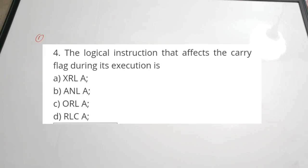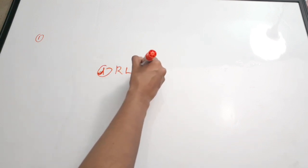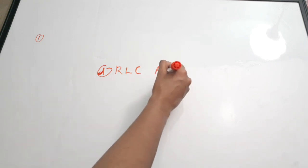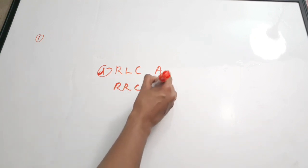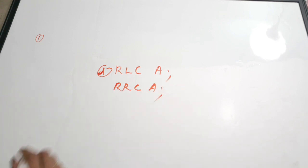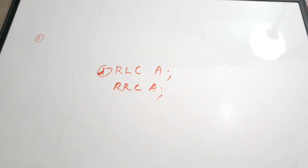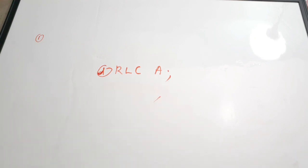The first question: the logical instruction that affects the carry flag during its execution is — A) XRL (XOR operation), B) ANL (AND), C) ORL (OR), D) RLC (rotate left through carry). The correct answer is option D, RLC. The other instructions don't affect the carry flag, but RLC will affect it. Also, RRC (rotate right through carry) will also affect the carry flag.